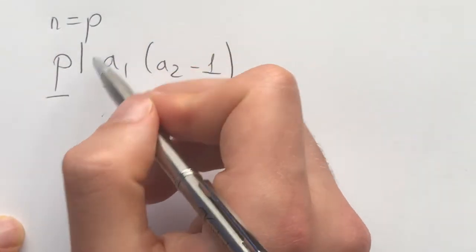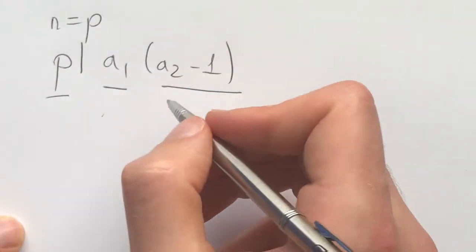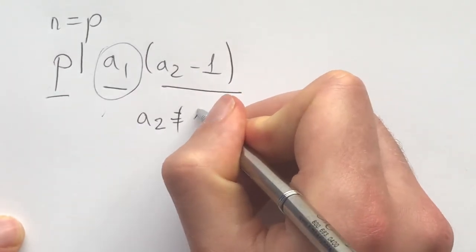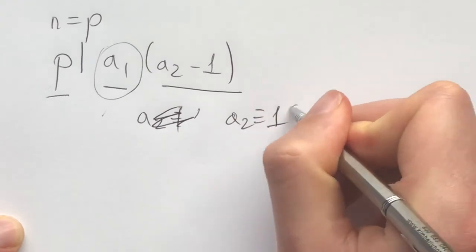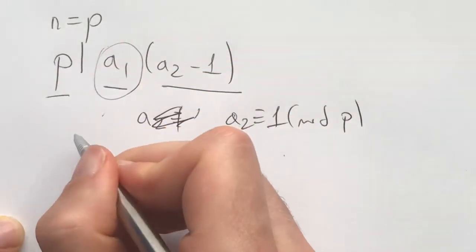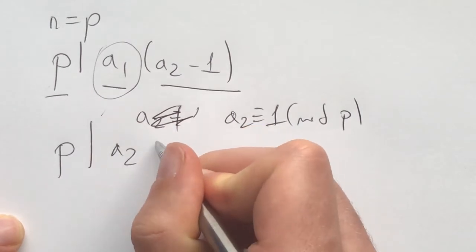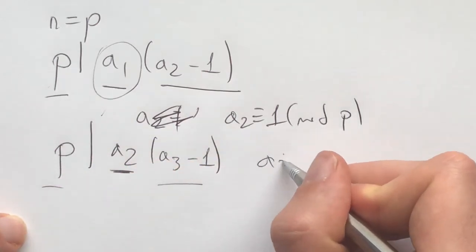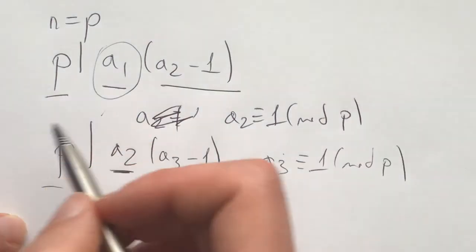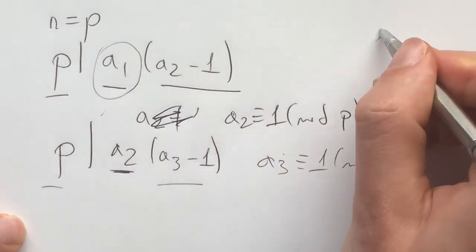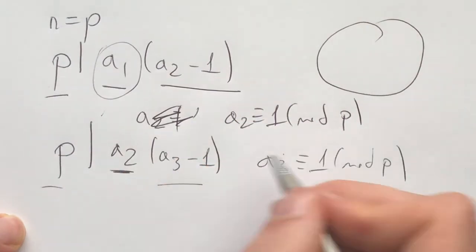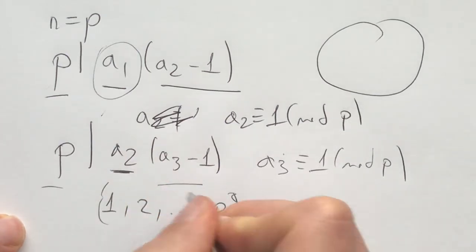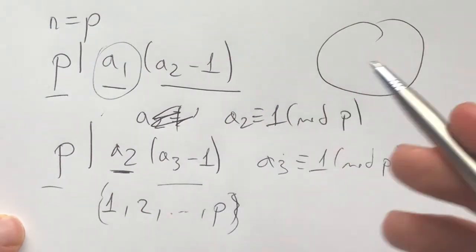Now if one of the numbers — say p doesn't divide a1 — that means a2 is congruent to 1 modulo p. But what does this tell us for the next condition that p divides a2 times a3 minus 1? Well, because p doesn't divide a2, p divides a3 minus 1, which means a3 is congruent to 1 modulo p. In the same way we can get that every single one of these numbers, because they are on a circle, is congruent to 1 modulo p. Given they are members of the set 1 to p, that means all of these numbers are equal to 1, and that's a contradiction because we assumed these numbers are distinct.